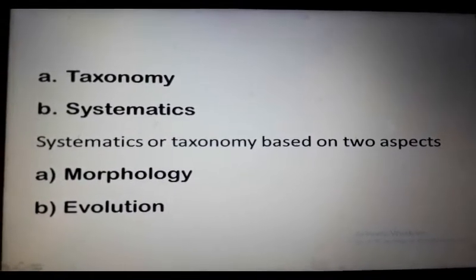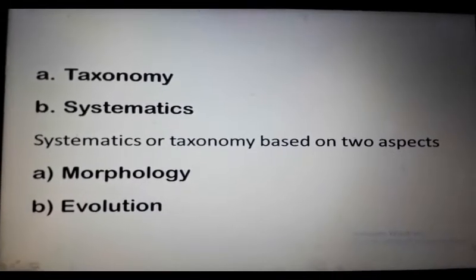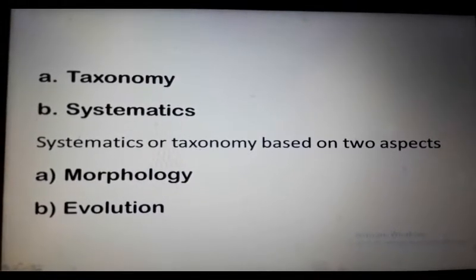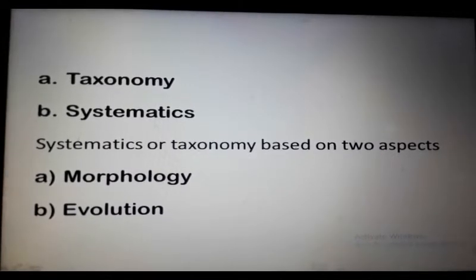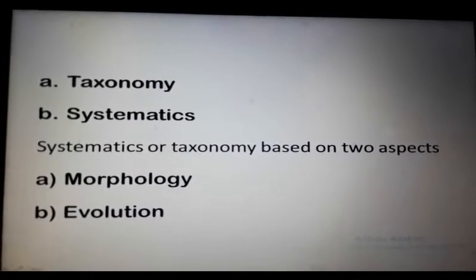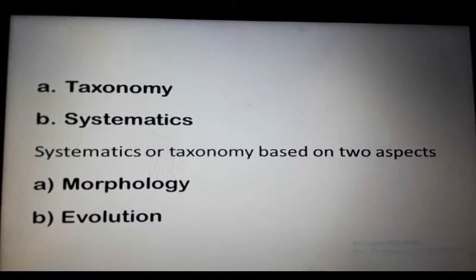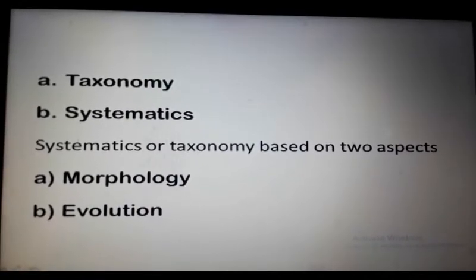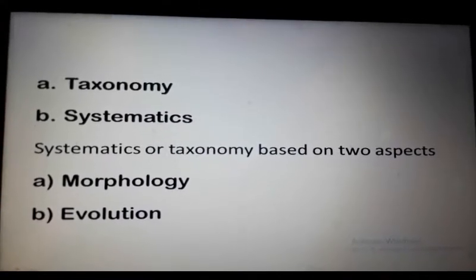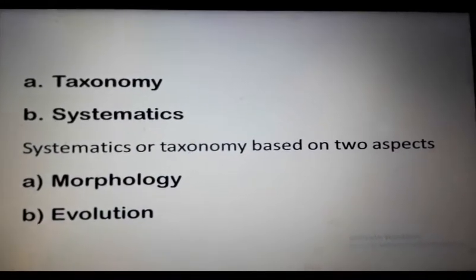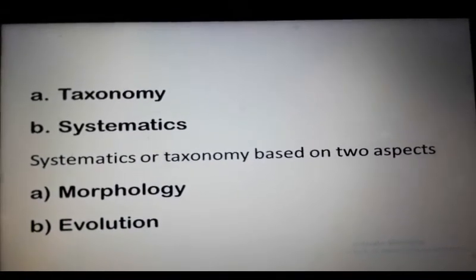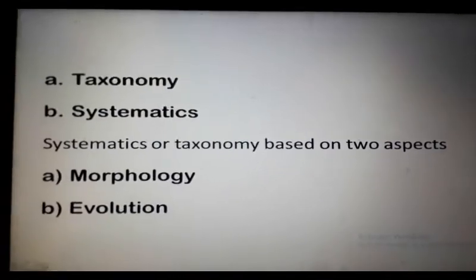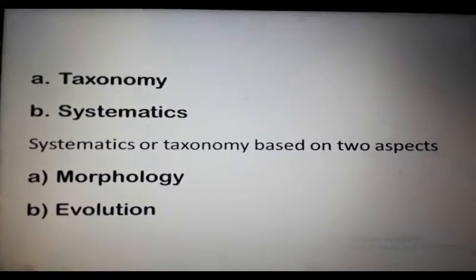Carolus Linnaeus recognized five taxa. Modern taxonomists use eight taxa, including Linnaeus's original five. These taxa are arranged hierarchically: kingdom, phylum, class, order, family, genus, and species.